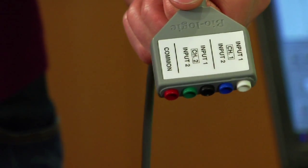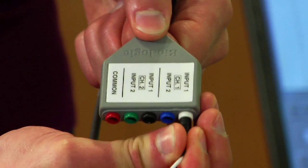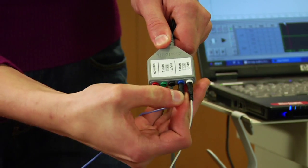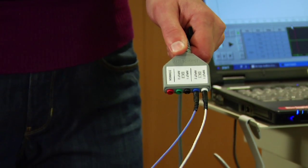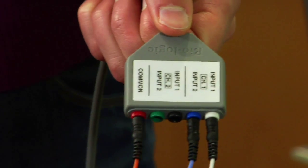The electrodes should be connected in the following manner. CZ is plugged into channel 1, input 1. The ground electrode is plugged into channel 1, input 2. The reference electrode is plugged into the input labeled common.